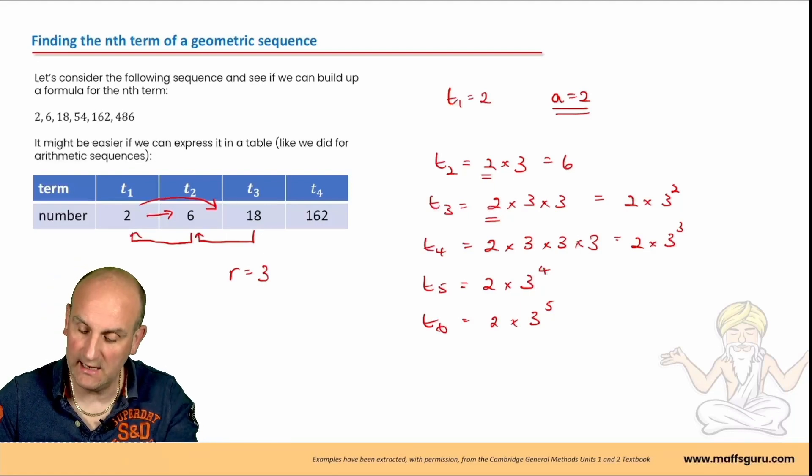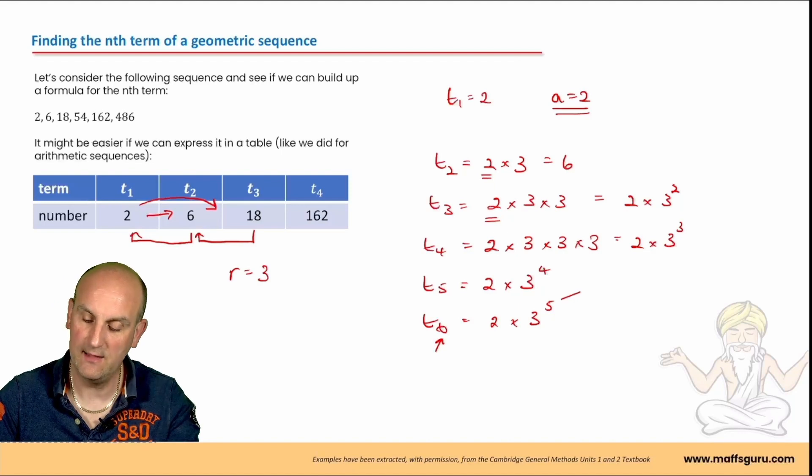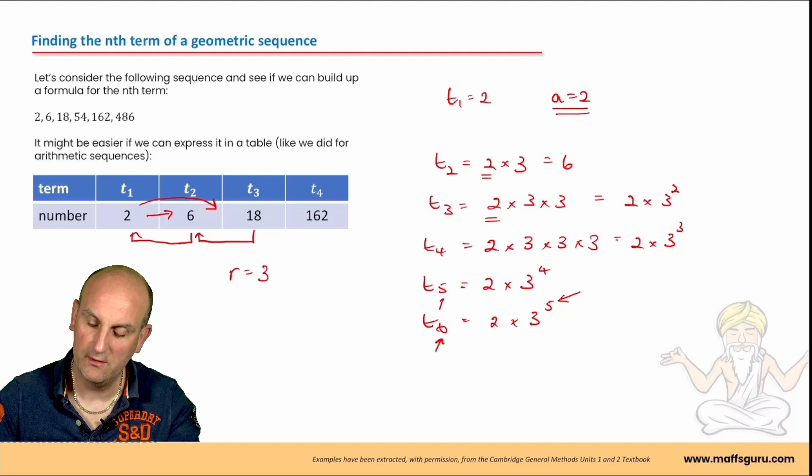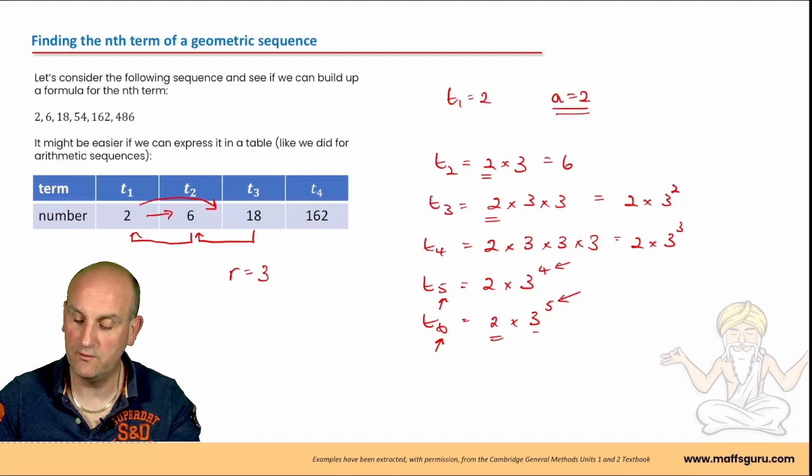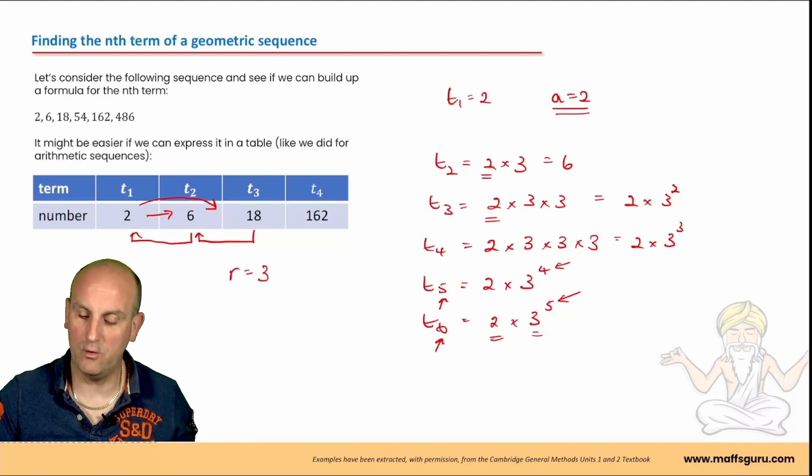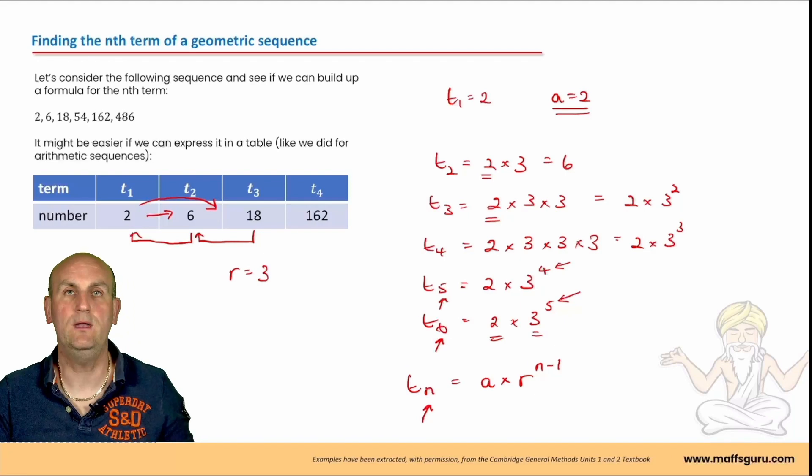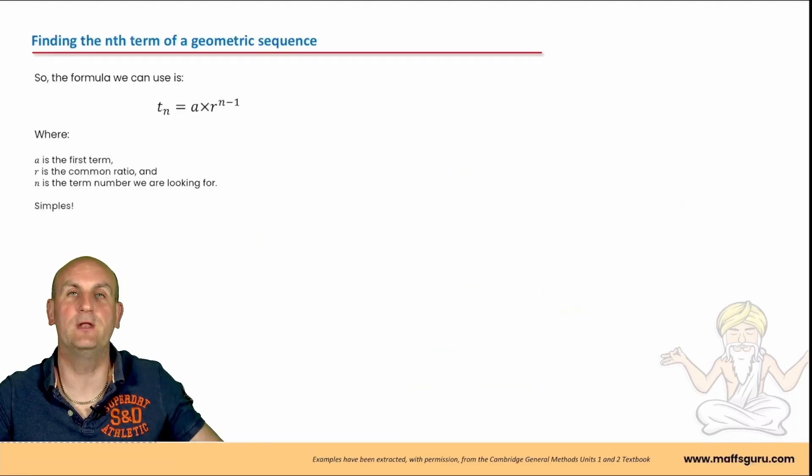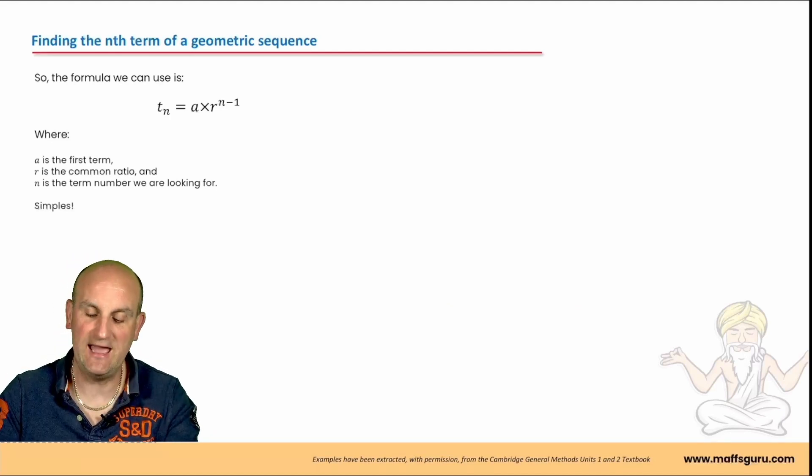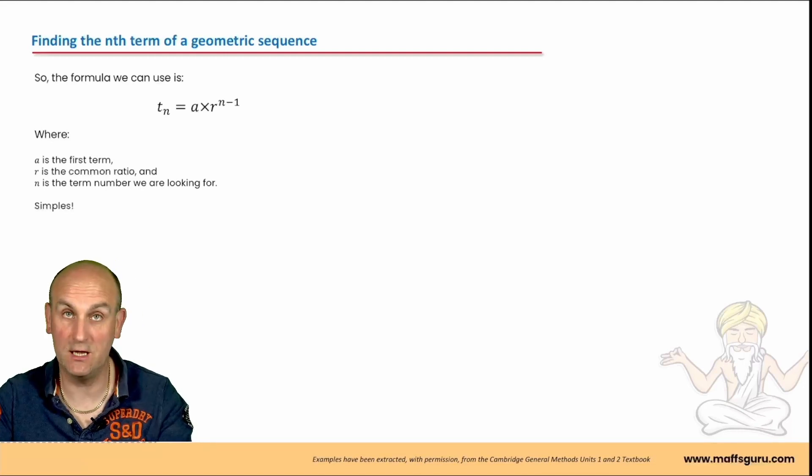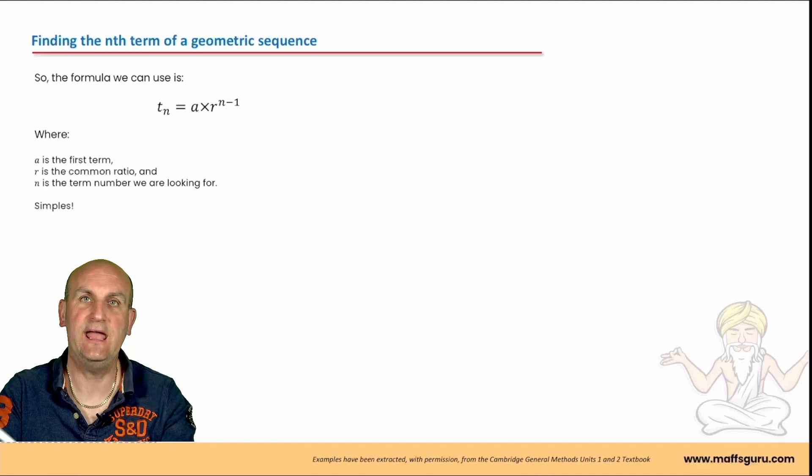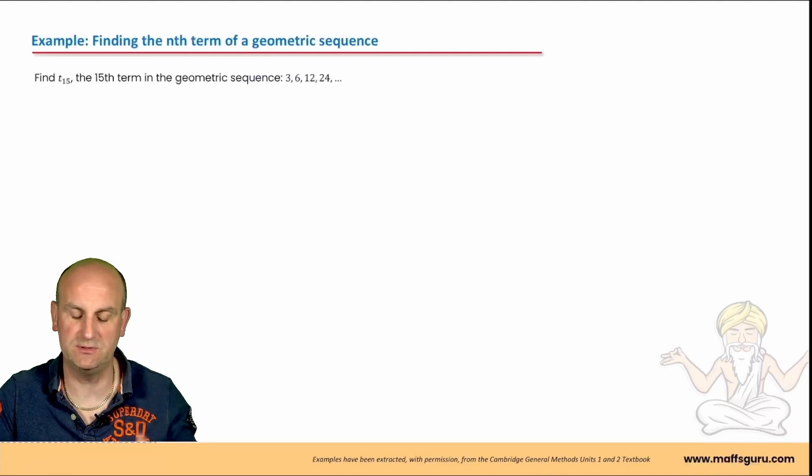Well, like we did previously, there is a link between this subscript number and the floating number. The subscript was 6, the floating number was 5. Where did this 2 come from? My first term. Where did this 3 come from? My common ratio. And lo and behold, we can say that t of n, in the same way we did before, is my first term a, times my common ratio r, to the power of n minus 1. Whatever this little number is, we take 1 and raise our common ratio to that power. So t to the n equals a times r to the n minus 1. a is my first term, r is my common ratio, and n is the term we're trying to find. Simple so far? Let's use it.